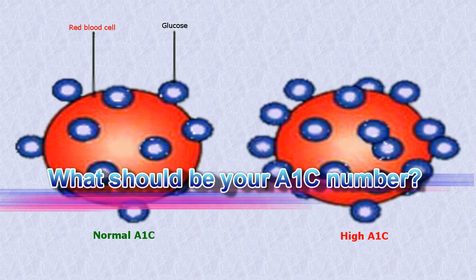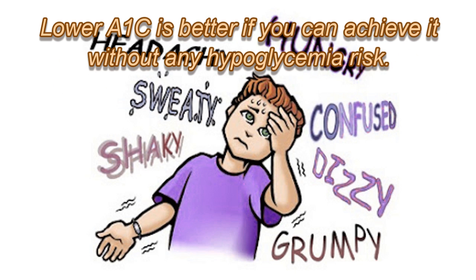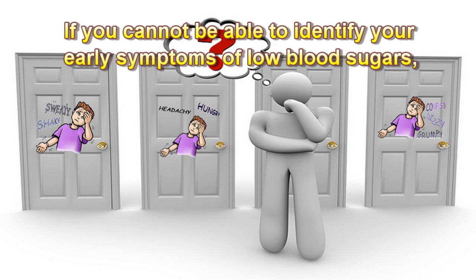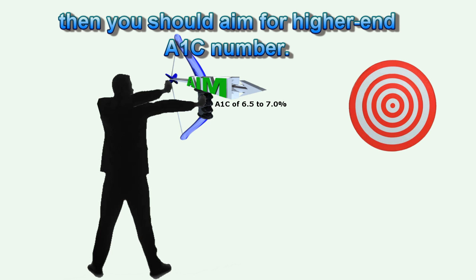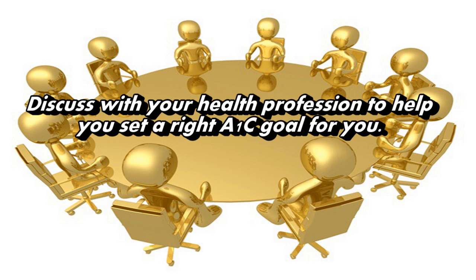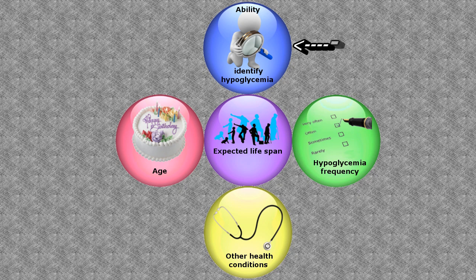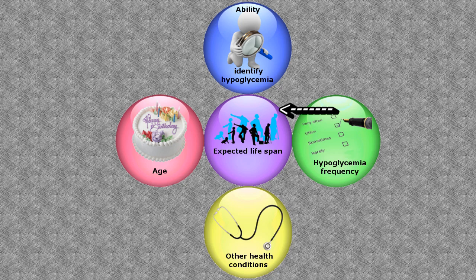What should be your A1c number? Most people with diabetes should aim to have an A1c of below 7. A lower A1c is better if you can achieve it without any hypoglycemia risk. If you cannot identify early symptoms of low blood sugars, you should aim for a higher A1c number. Discuss with your health professional to set the right A1c goal based on your age, ability to identify hypoglycemia, frequency of hypoglycemia episodes, other health conditions, and expected life span.